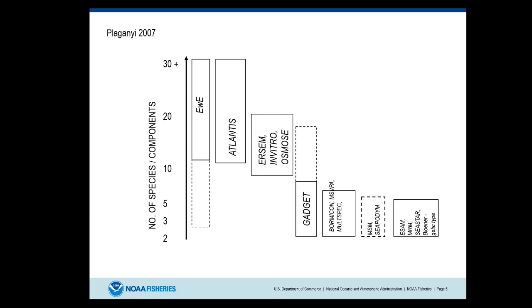Once you've stepped through that, you can also get an idea of how many species or components are going to be in your model — this goes to the complexity and how much data will be required. On one end, your extended single species assessment models or minimal realistic models incorporate two, three, maybe five species at most. Dynamic system models might have 10 to 15 species. At the whole ecosystem level, your Ecopath models and Atlantis models, you're going to be looking at 20, 30 or more species.